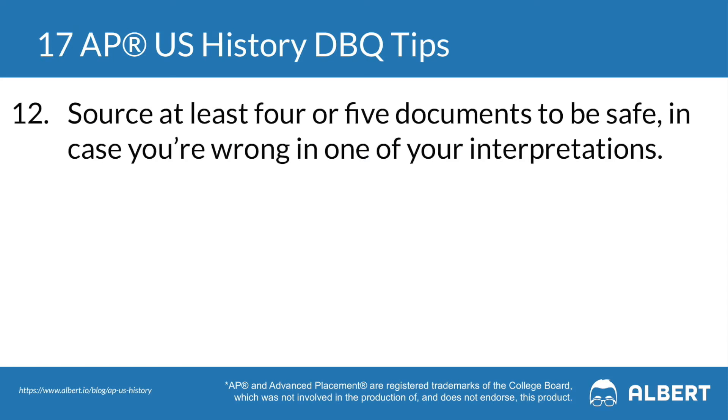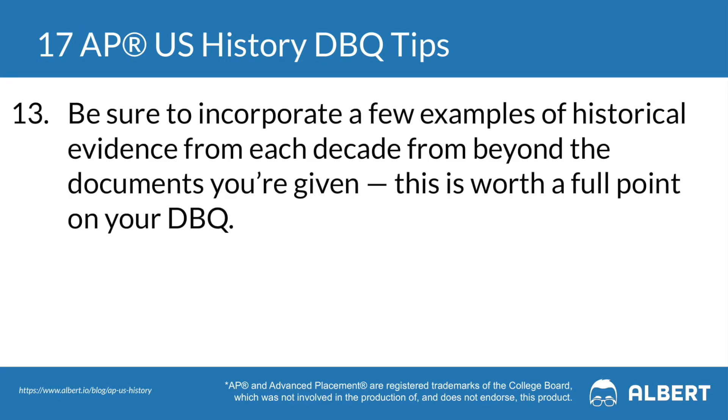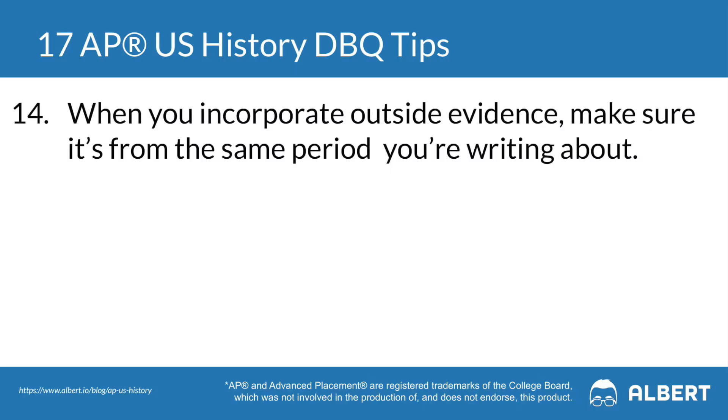Our next tip is to try sourcing at least four or five documents so that you can be safe in case you're wrong about one of your interpretations. Tip thirteen is to make sure that you're giving specific historically relevant information from beyond what's being given to you in the documents — this is worth a full point on your DBQ. When you're incorporating this outside evidence, make sure it is actually from the same time period that you're writing about, as chronology is super important.